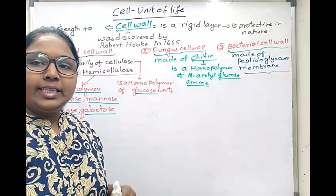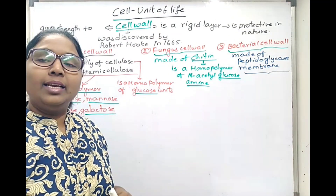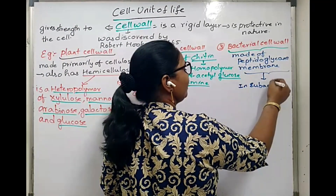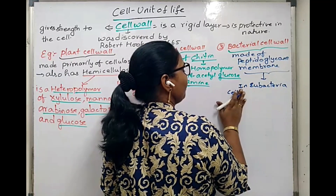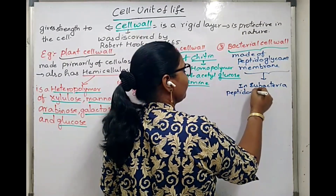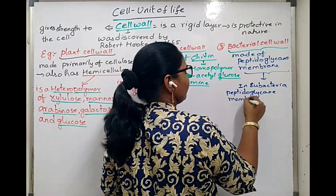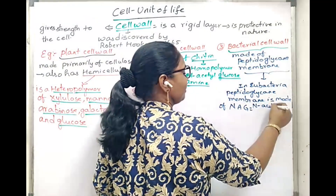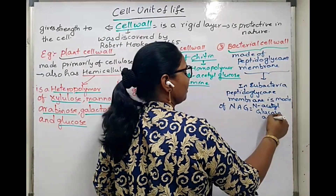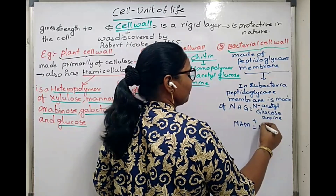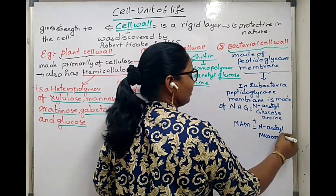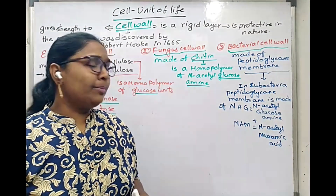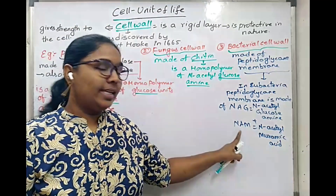The peptidoglycan membrane in bacterial cell walls: in eubacteria (true bacteria), it is made up of a combination of N-acetyl glucosamine and N-acetyl muramic acid. In archaebacteria — the primitive ancestral bacteria — the peptidoglycan membrane is made up of N-acetyl glucosamine and N-acetyl pseudomuramic acid.